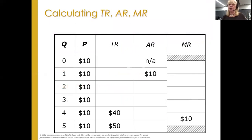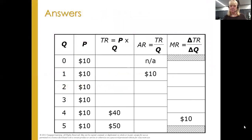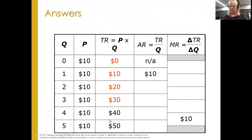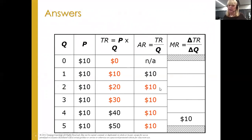Let's calculate total revenue — it's just price times quantity, multiplying those two columns for every row. So 0 times 10 is 0, 1 times 10 is 10, 2 times 10 is 20, 3 times 10 is 30. For average revenue, we divide total revenue by quantity: 10 divided by 1 is 10, 20 divided by 2 is 10. It always comes back to $10.